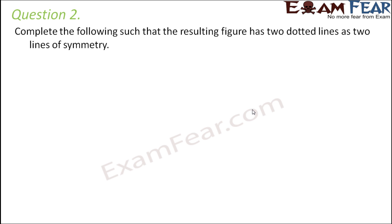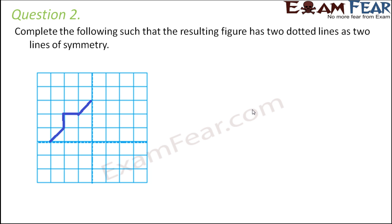Question number two: complete the following such that the resulting figure has two dotted lines as lines of symmetry. The dark blue lines are the part of the actual figure which we need to complete. The dotted lines — one horizontal and one vertical — are the lines of symmetry. That means if this is the vertical line of symmetry and this is the horizontal line of symmetry, anything that is on one side will have exactly the same thing on the other side as well.